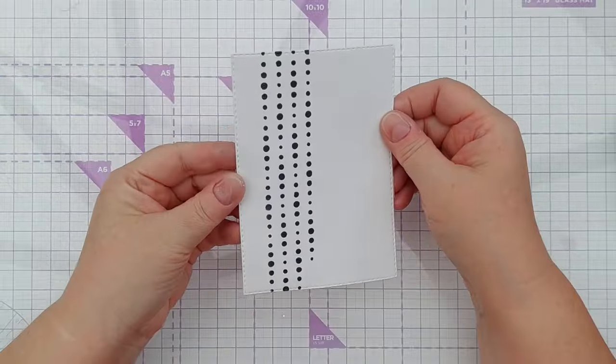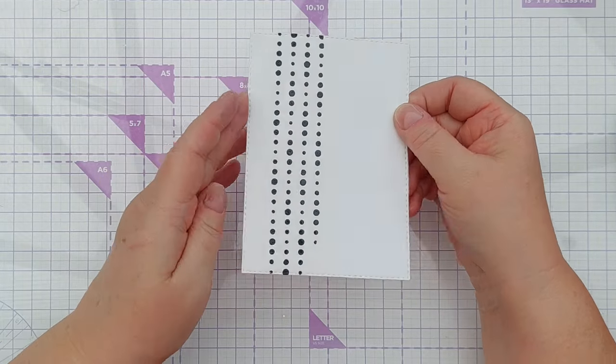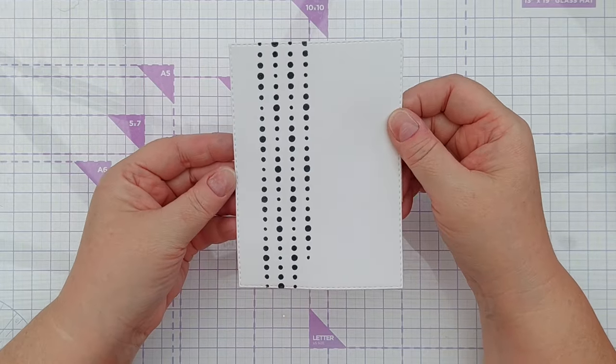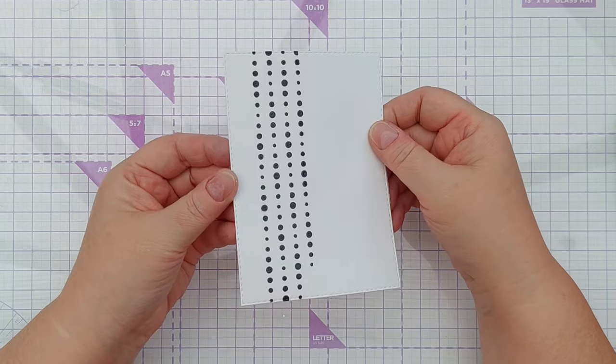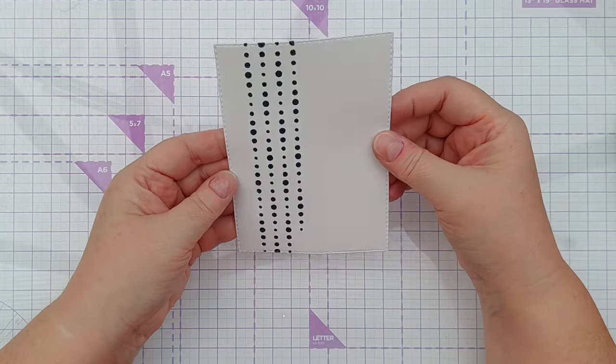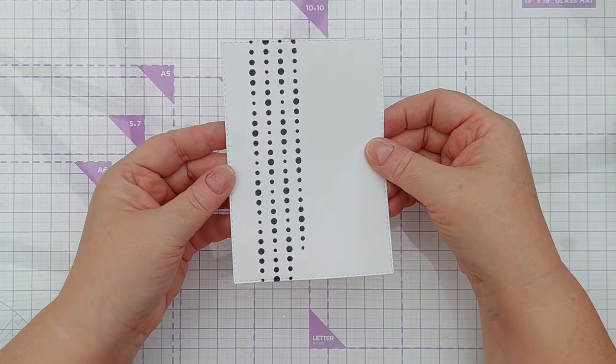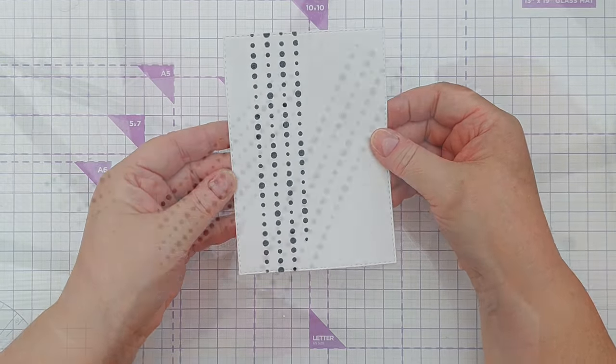So now I've got some lovely, shiny, slightly dimensional black dots running down my card front. The heat embossing does darken the colour a bit so they look more black than they would if I didn't do the heat embossing on top.